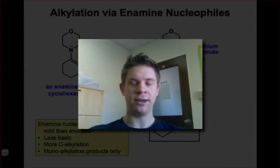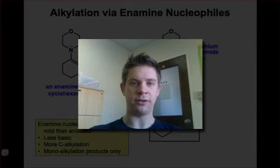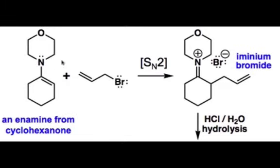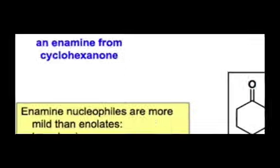Just like enols and enolates, enamines are nucleophilic and can act as nucleophiles in SN2 reactions. Here we see an example in which a morpholine enamine has reacted with an alkyl bromide to form a carbon-carbon bond through an SN2-type reaction.